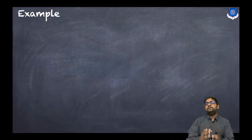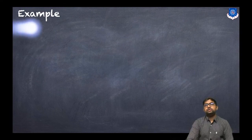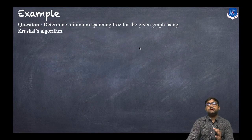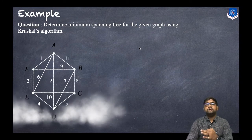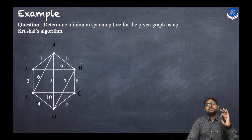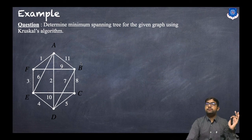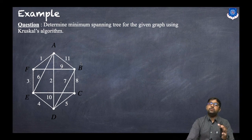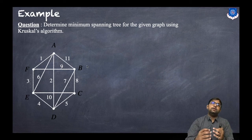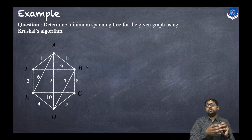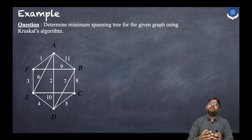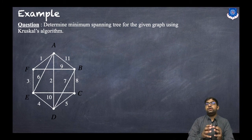Now we will discuss the same example using Kruskal's algorithm, so you can get the idea of which method you should prefer. The question is: determine the minimum spanning tree for the given graph using Kruskal's algorithm. This is the same graph we discussed in Prim's algorithm. The key difference is that in Prim's algorithm we selected vertices, whereas here we will select edges of minimum weight.